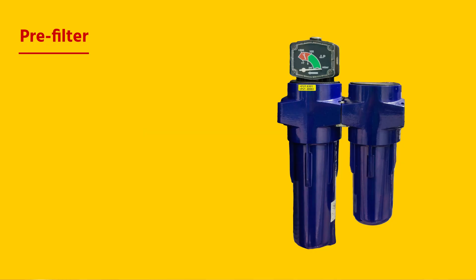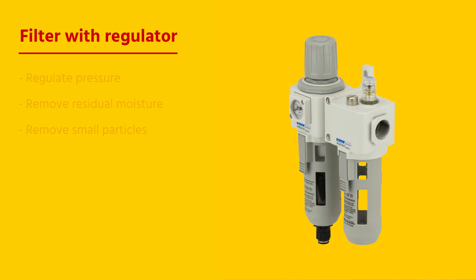A common way to filter out the main contaminants is to use a pre-filter. This filter is placed immediately after the compressor, before the air enters the system, removing the largest particles. A filter in combination with a regulator is often placed directly in front of the application to regulate pressure, remove residual moisture from the air, and remove smaller particles that have not been filtered out by the pre-filter.